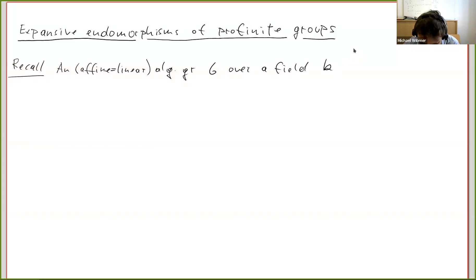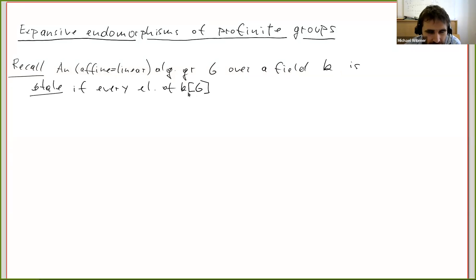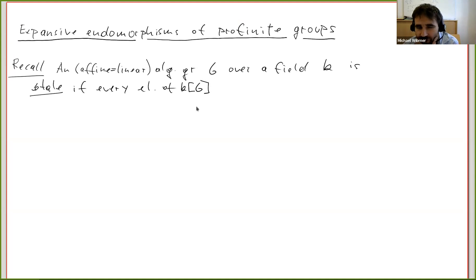Everything is over a fixed field k. Such a group is called étale if the coordinate ring — so whenever you have an algebraic group there is naturally associated to it a Hopf algebra which is a finitely generated algebra, denoted the coordinate ring of G. When you think of G as an affine variety defined by polynomial equations, you can think of this as the polynomial ring modded out by all polynomials that vanish on G. We require that every element of the coordinate ring satisfies a separable polynomial over k.